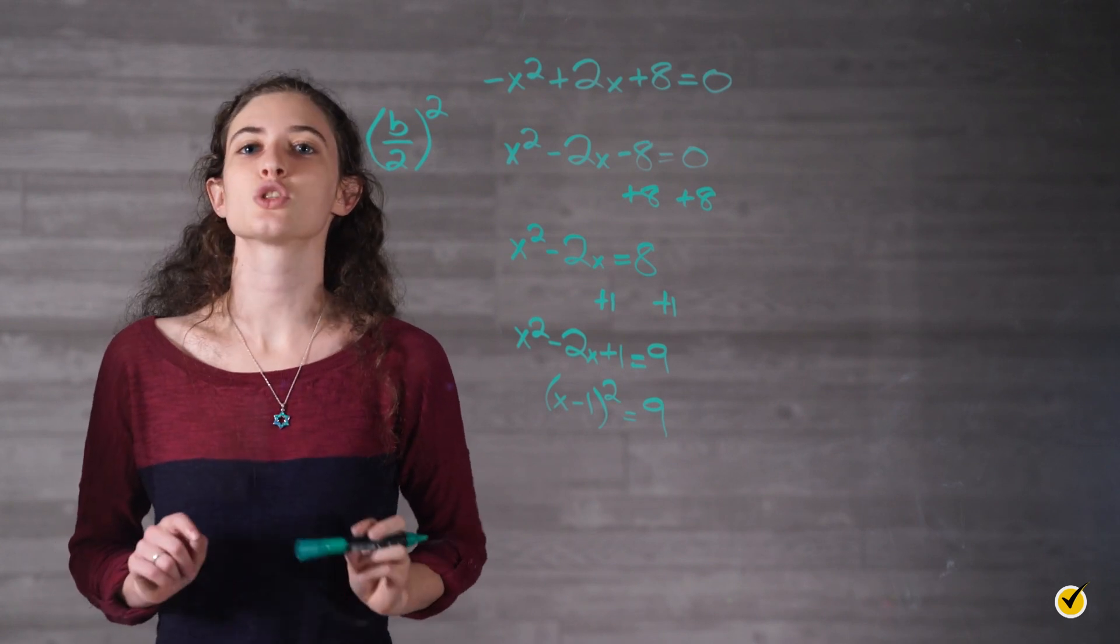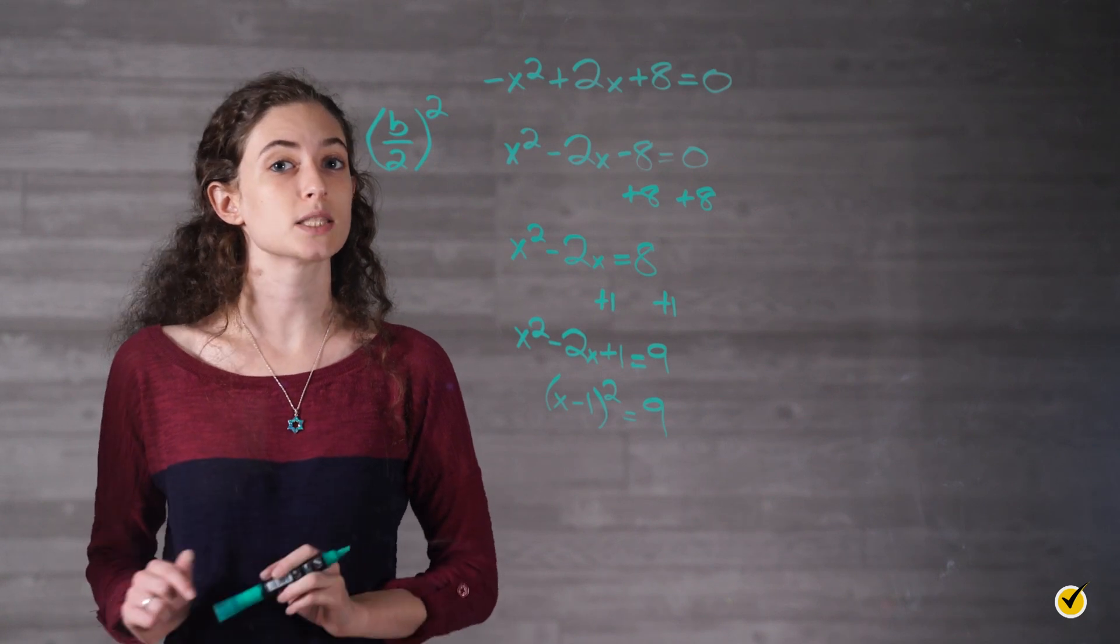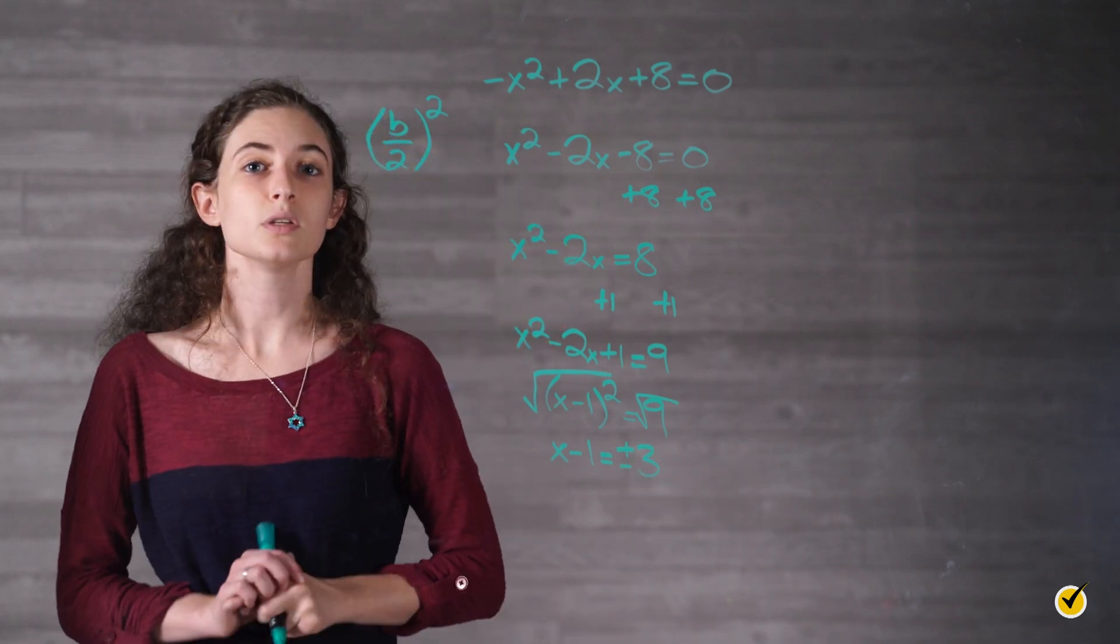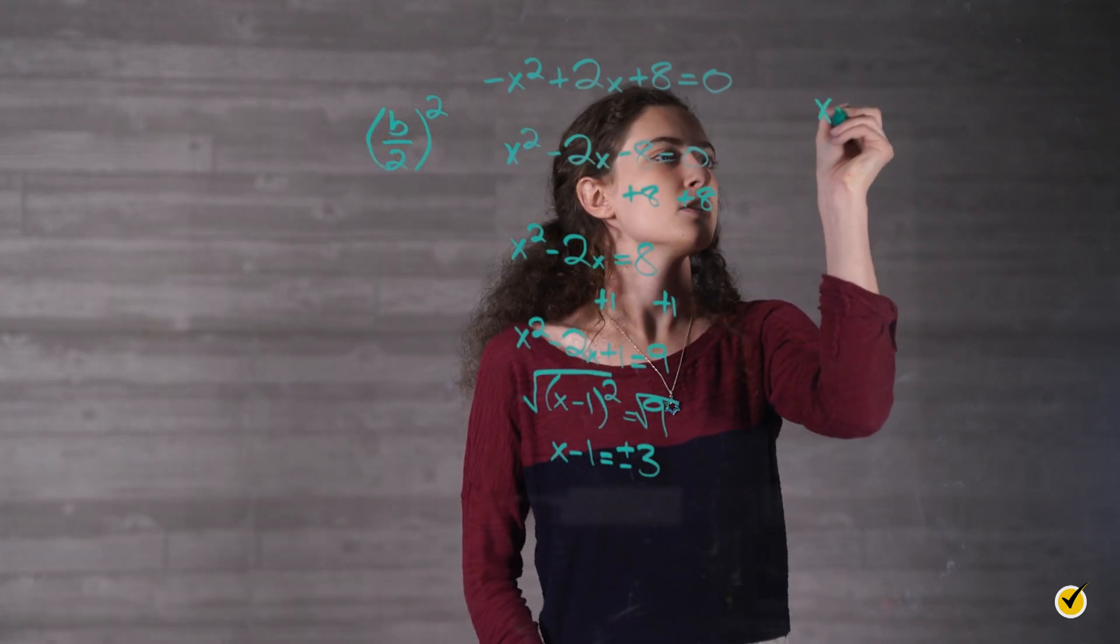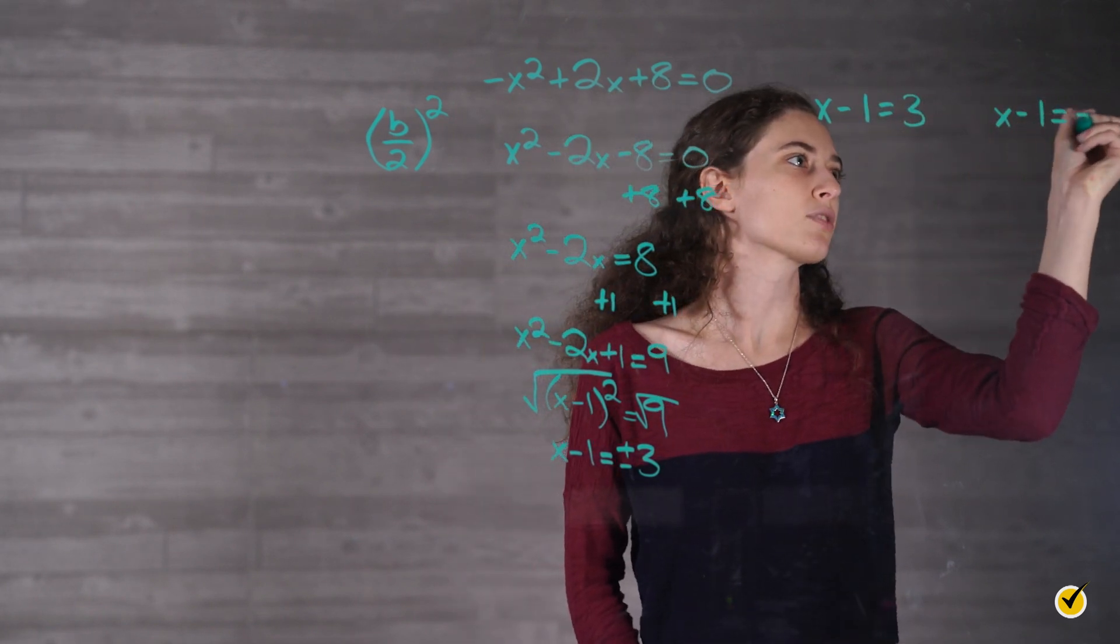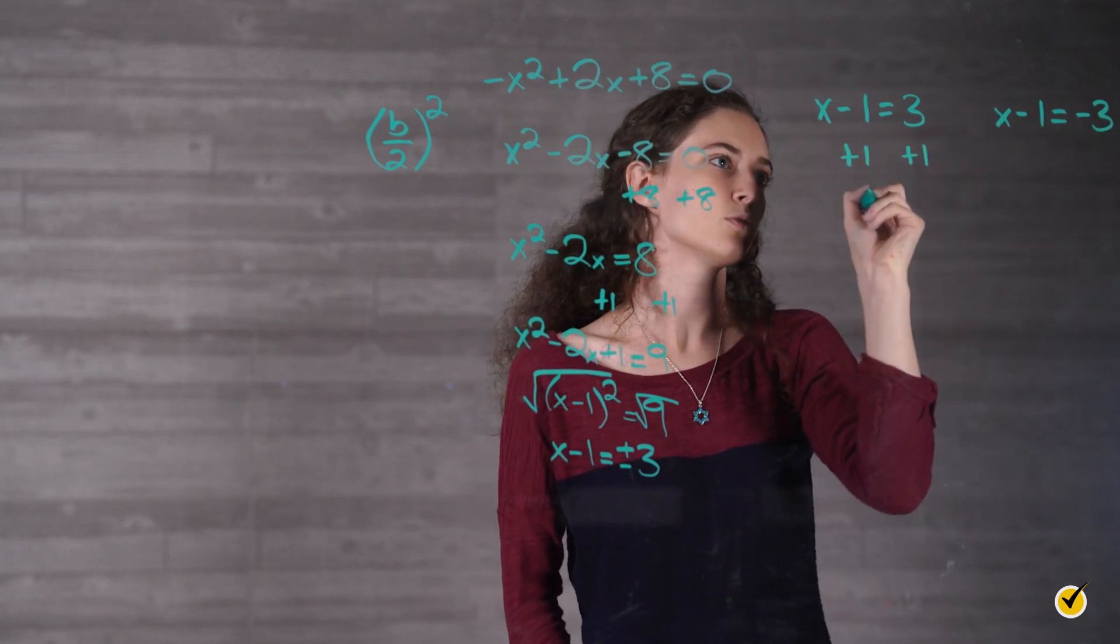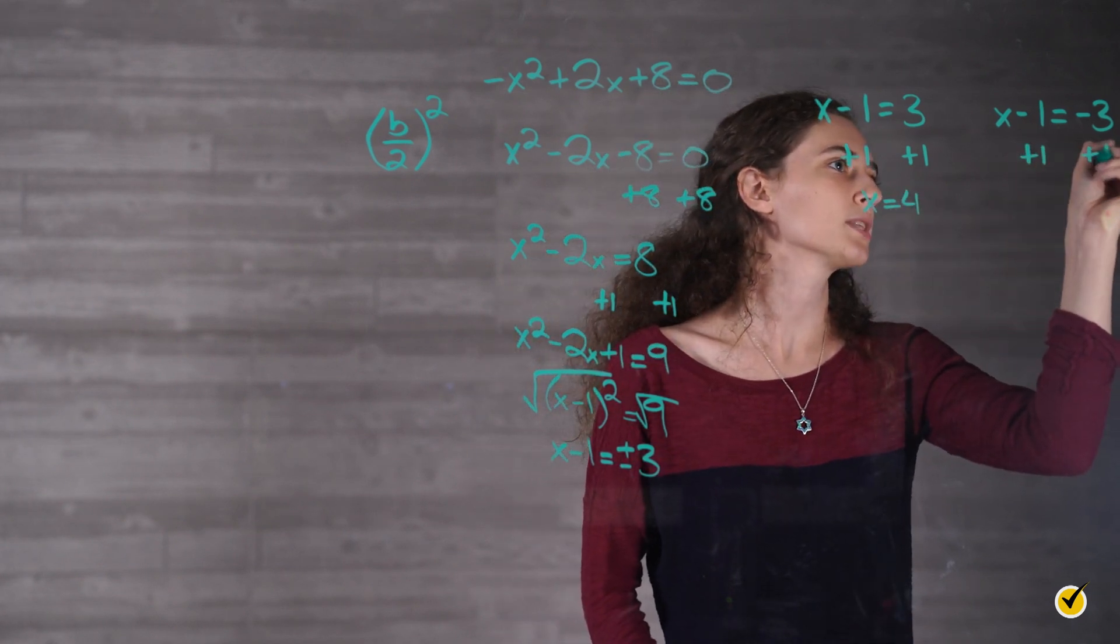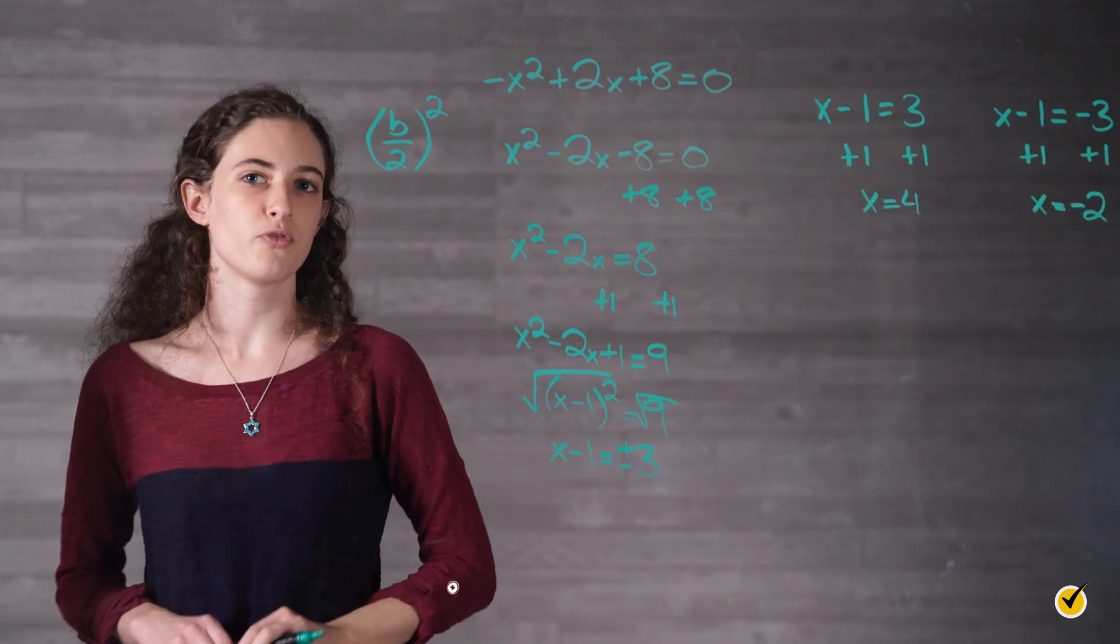Since we have a perfect square, we take the square root of both sides. On the right-hand side, we need to account for both positive and negative square roots. Now we'll split into separate mini equations: x minus 1 equals 3, and x minus 1 equals negative 3. We're going to solve for x by adding 1 to both sides, which gives us x equals 4. And here we're going to do the same, add 1 to both sides, which gives us x equals negative 2. We get the same solutions as before.